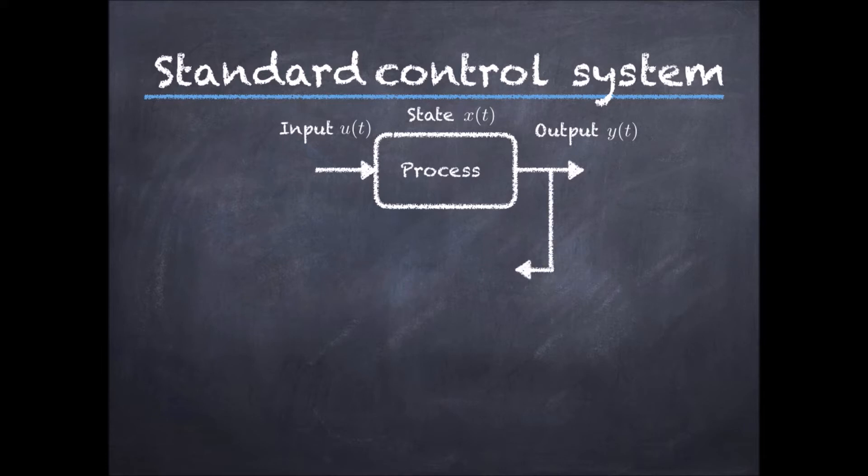The goal of a control law is then to decide, based on the output, what should be the input in order to achieve a desired behavior. Let us now have a look at how this process is actually implemented over time.